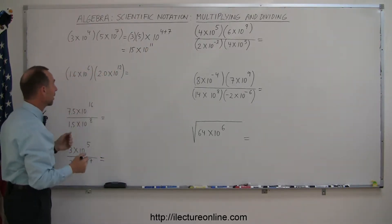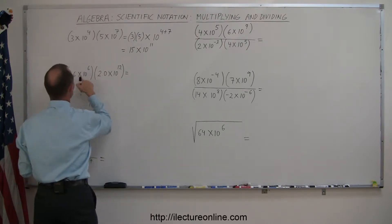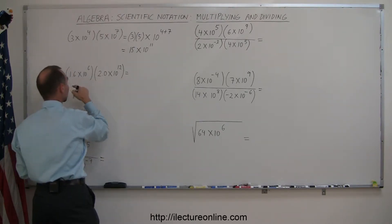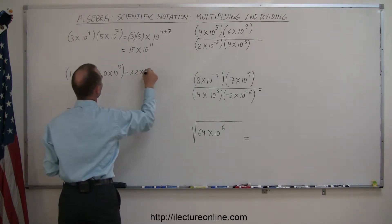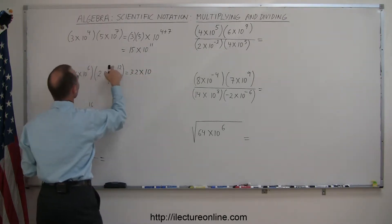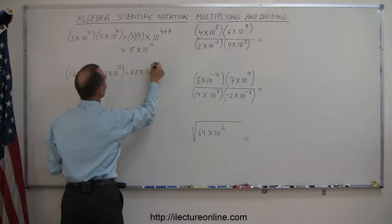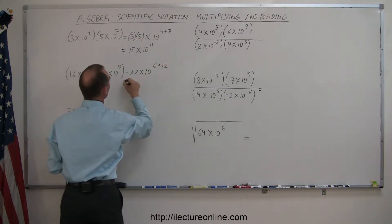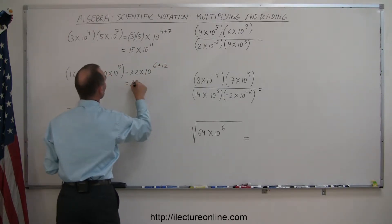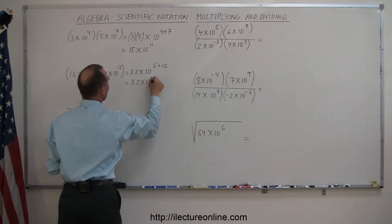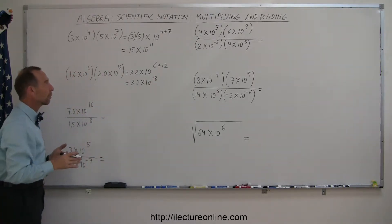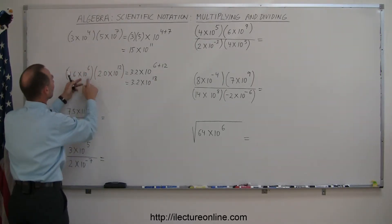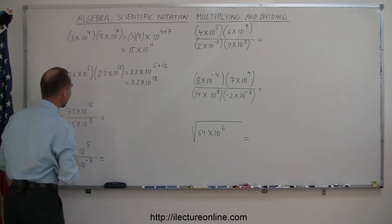The second example works the same way. We multiply 2.0 times 1.6, which equals 3.2, times 10 to the 6 plus 12 power. So this becomes 3.2 times 10 to the 18th power. The rules are fairly straightforward: simply multiply the numbers together and add the exponents.